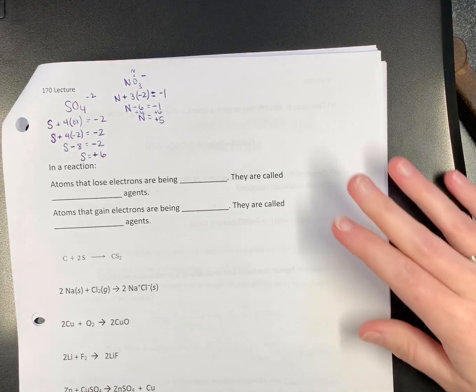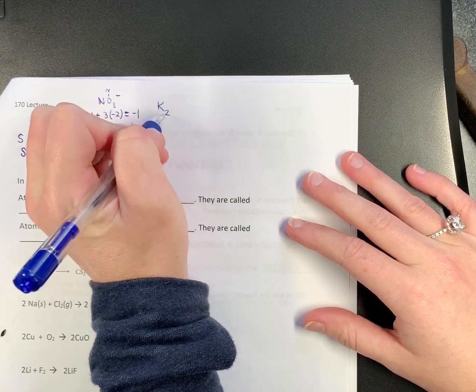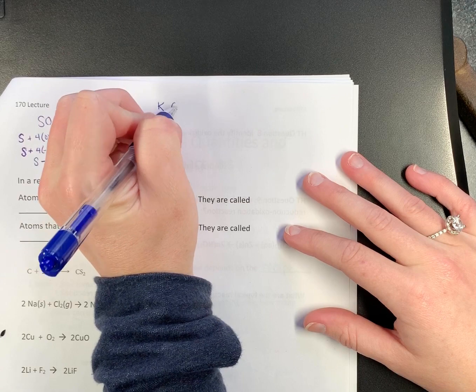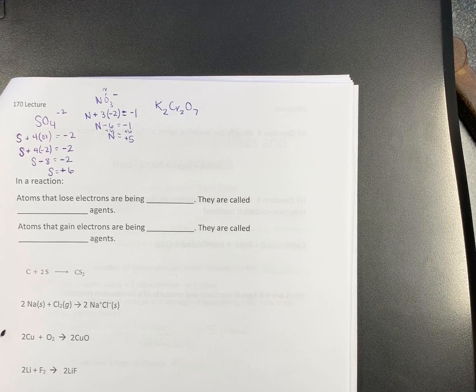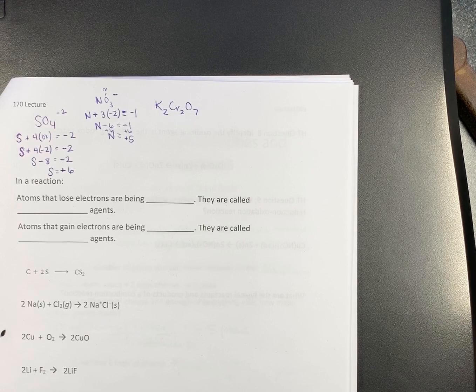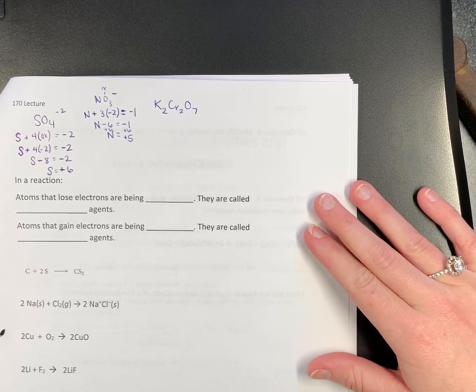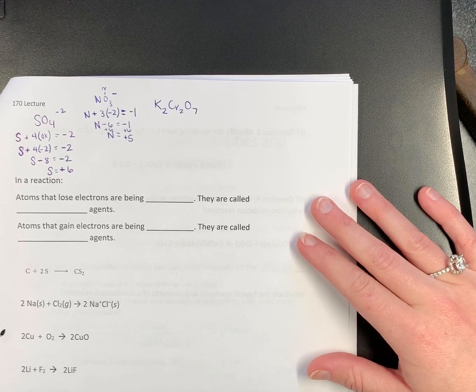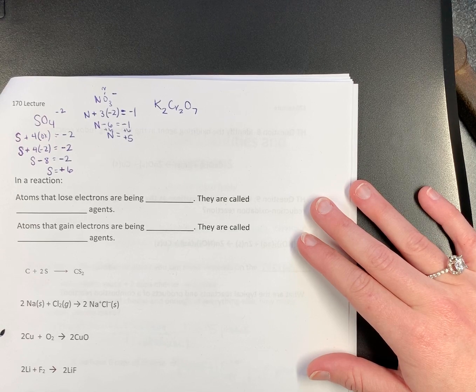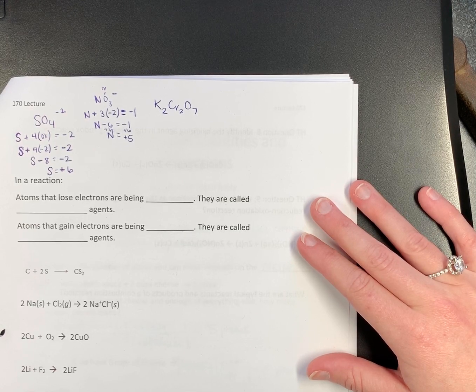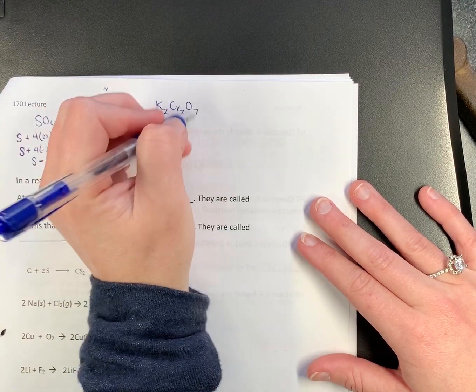This one's going to be more complicated. K2Cr2O7. So we've got to look at our rules. Do we have any free elements? No. Do we have any single ions? No. Do we have a neutral compound? Yes. So everything adds up to what? Zero. So everything's going to add up to zero.